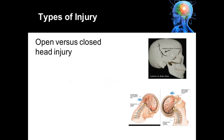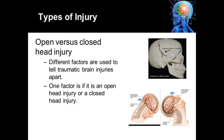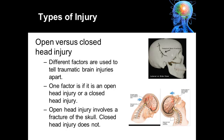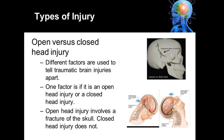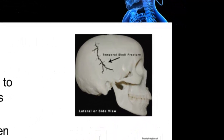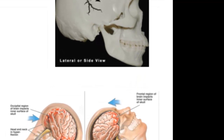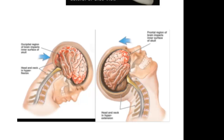This slide goes over open versus closed head injury. There are different factors used to tell traumatic brain injuries apart. One factor is if it is an open head injury or a closed head injury. An open head injury involves a fracture of the skull. A closed head injury does not. As depicted in the picture, you can see on the upper right-hand side there's a picture of a skull with a fracture or a break in the bone. Below shows a mechanism of closed head injury, where the brain actually gets jostled around within the bony structure of the skull.